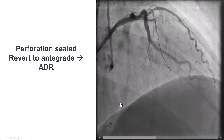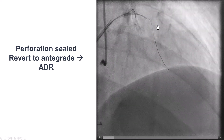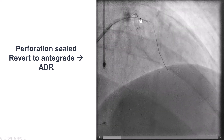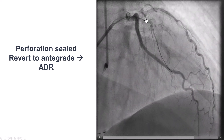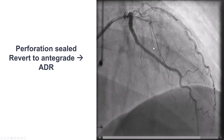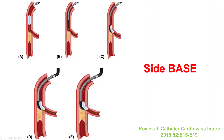At this point, retrograde had failed, and in the meantime we confirmed sealing of the area of contained perforation from before. The remaining option was the move-the-cap technique — specifically the side-base technique — in which we create a dissection proximal to the proximal cap of the CTO. A balloon is inserted partially into the side branch and partially into the main vessel, trapping a microcatheter through which a knuckled guide wire is advanced into the extraplaque space.